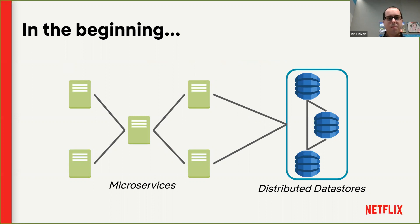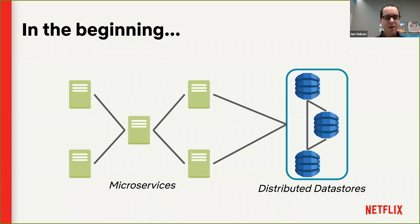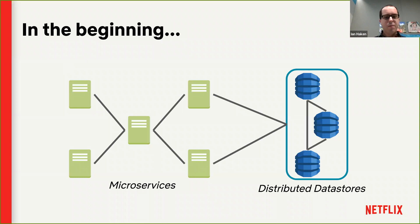In the beginning, Netflix had a traditional perimeter model. There weren't even VPCs at first, but there were security groups to build an isolated ecosystem inside AWS. We had a handful of microservices that talked to each other and to some distributed data sources like Cassandra and DynamoDB. There wasn't a lot of granular access control — some security groups meant some services could only talk to some data stores, but it was pretty close to a traditional perimeter model.